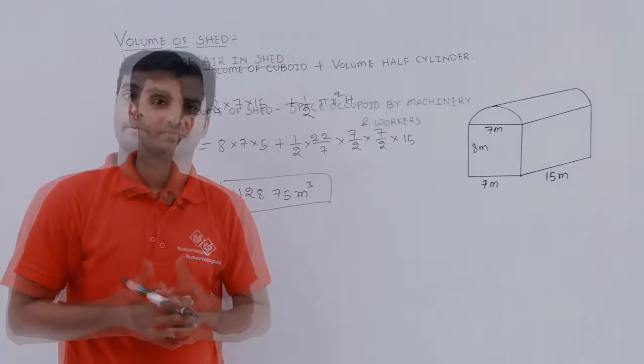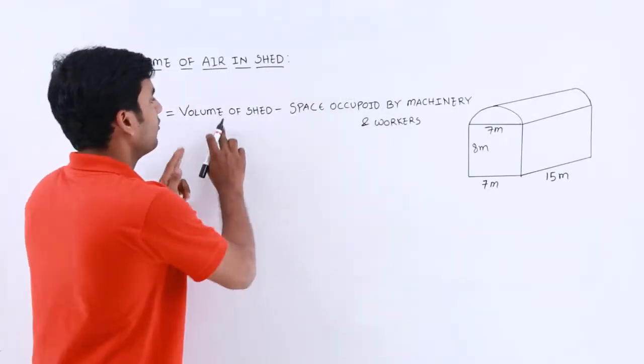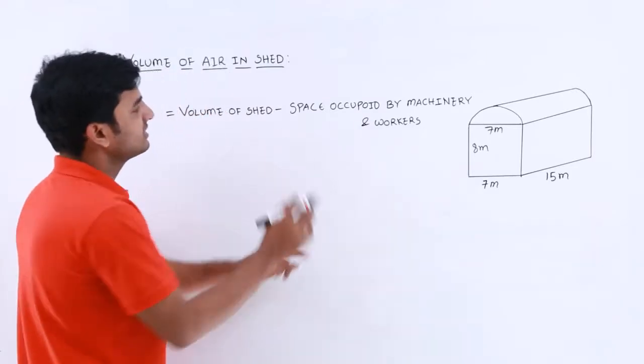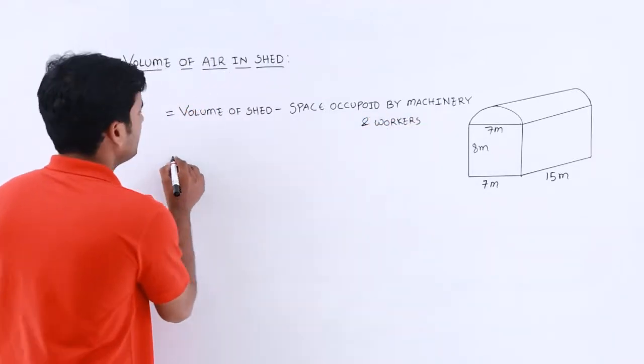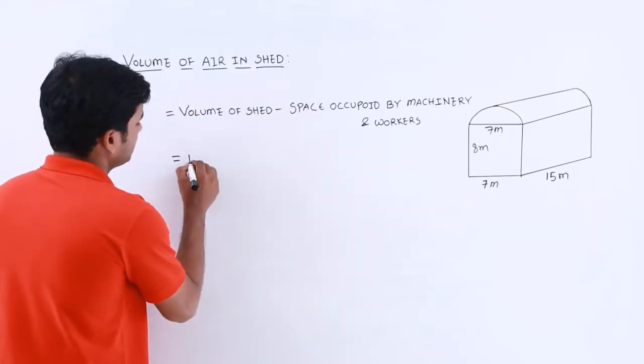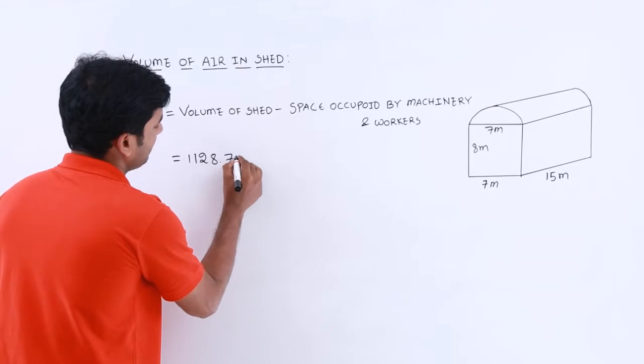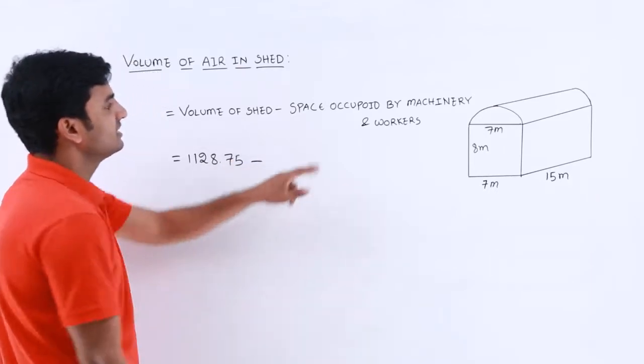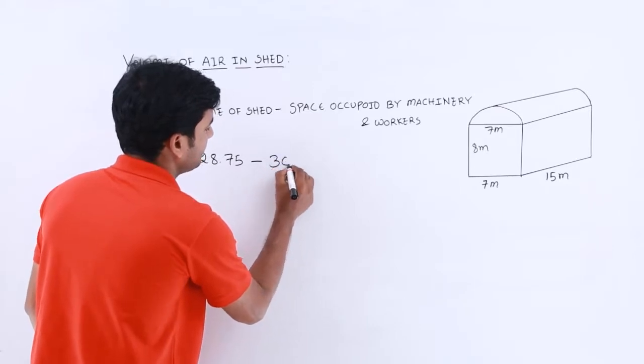Now volume of air in shed is equal to volume of shed minus space occupied by machinery and workers. Volume of shed we know that is 1128.75 minus space occupied by machinery that is 300 meter cube.